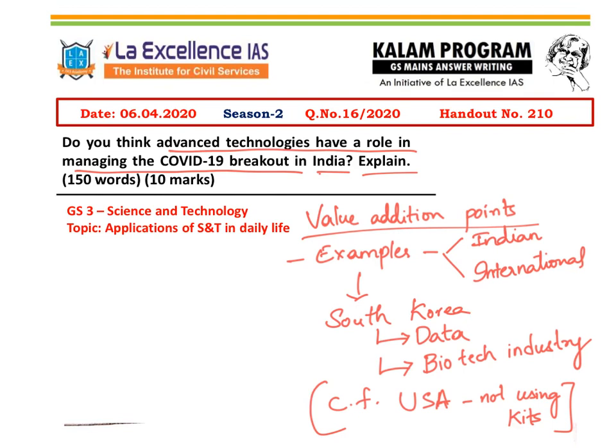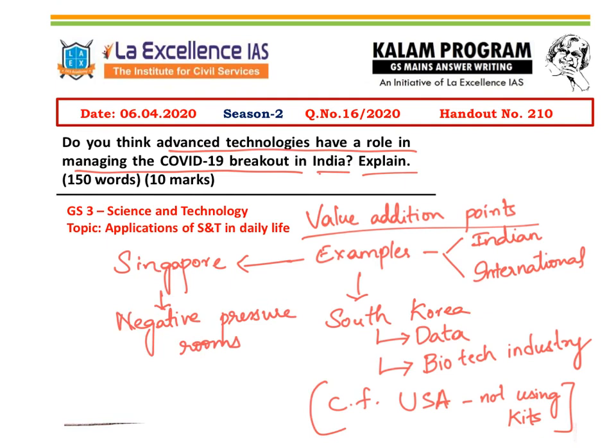Such examples can be good value addition points in our answer. One more example is Singapore, wherein isolation hospitals and negative pressure rooms were created much before COVID-19 was declared a public health emergency. This was done because they had past experience of SARS in 2002–2003, which caused huge casualties, and since that time they had been prepared with negative pressure rooms. Negative pressure rooms will prevent infection from spreading. Such technological innovations, wherever they are used, can be brought into our answers.